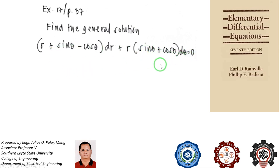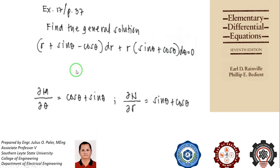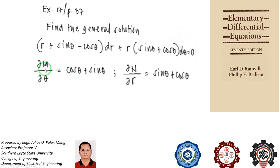Our variables here are θ and r, not x and y. When checking whether this is an exact differential equation, this is our M term and this is our N term, with dr and dθ respectively. M should be differentiated with respect to θ, and N with respect to r.